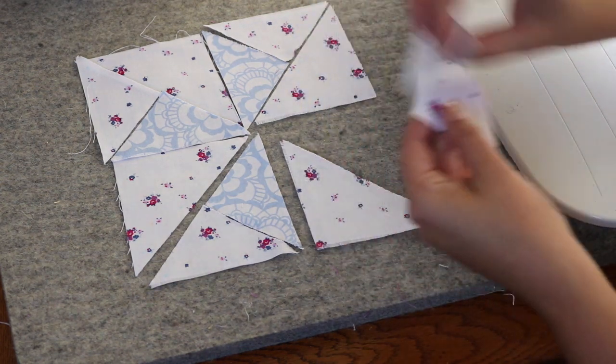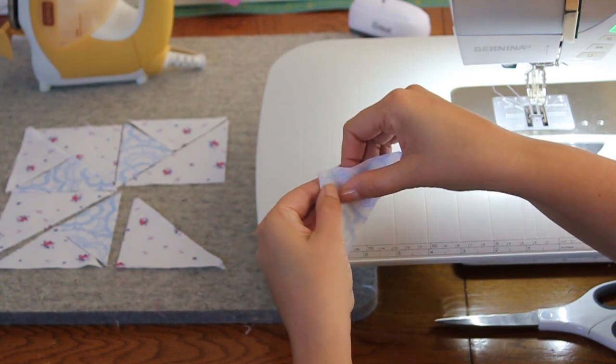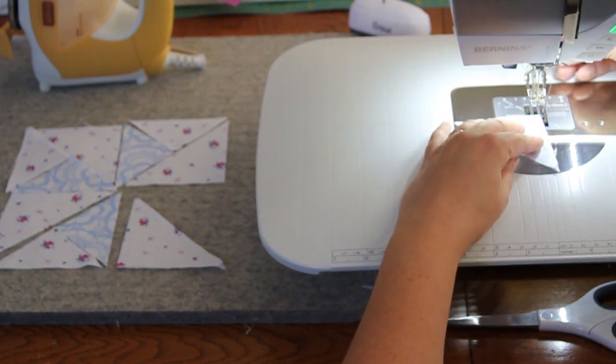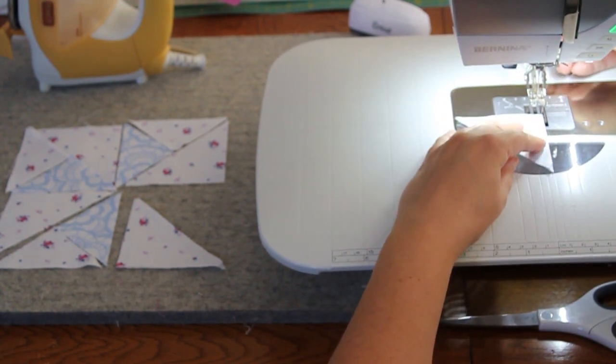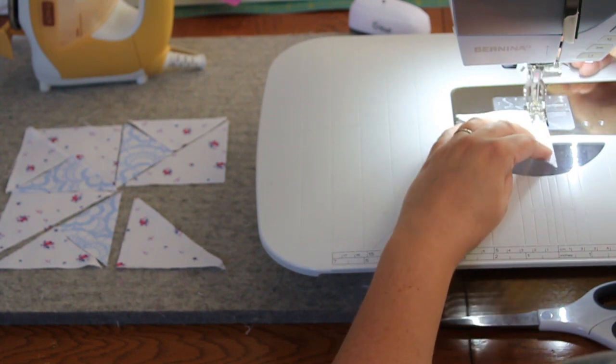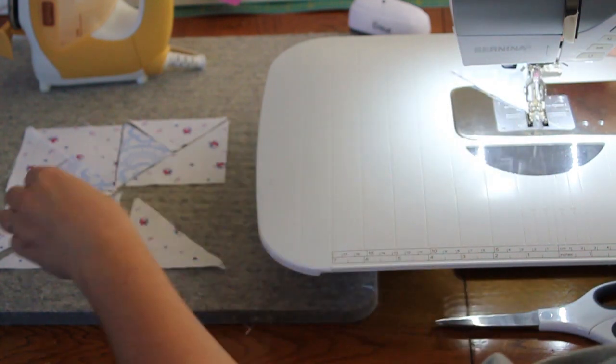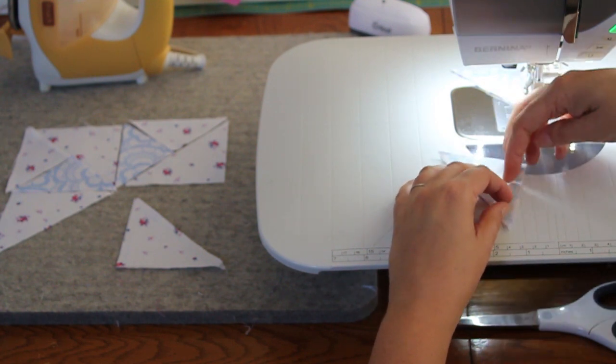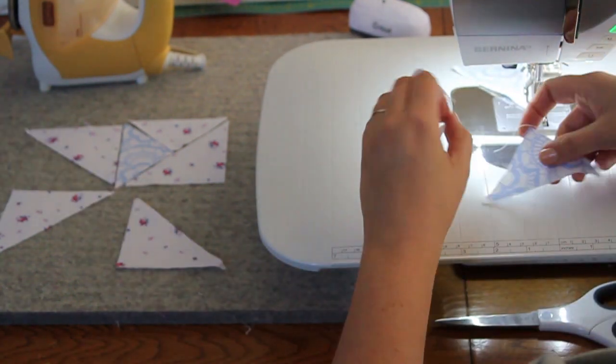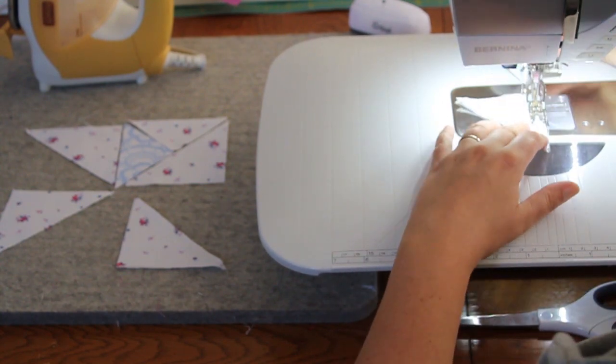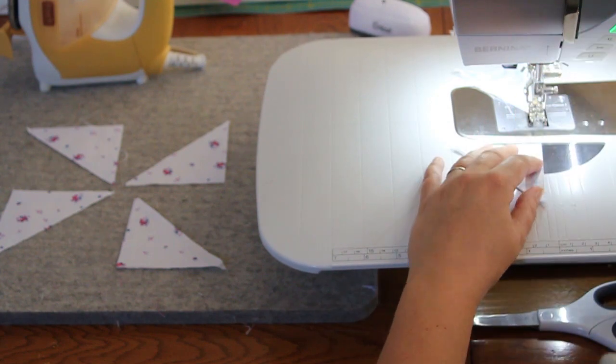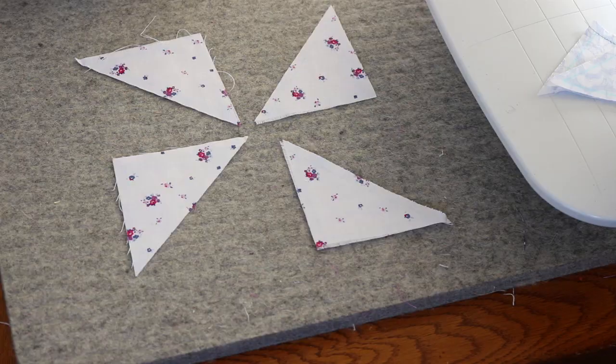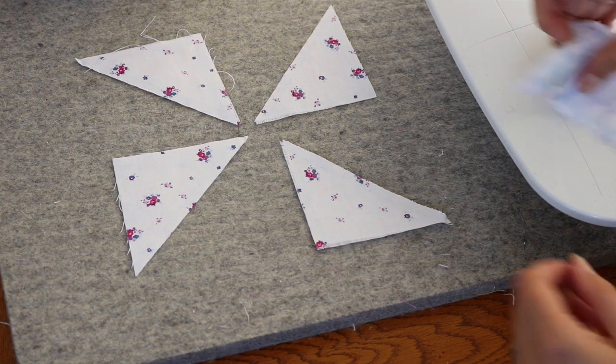So let's go ahead and start putting our right sides together and we'll stitch these quarter square triangle units. We're chain piecing just like we have in the past. Perfect, four quarter square triangle units.